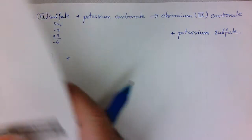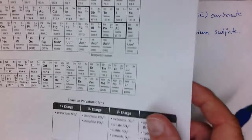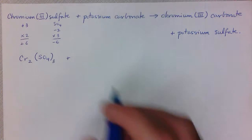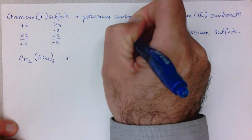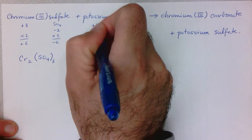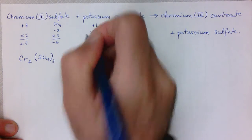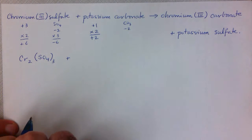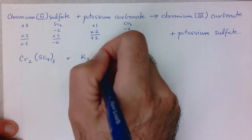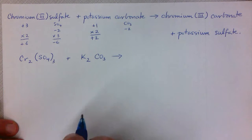Now let's go to potassium carbonate. Potassium has a charge of plus 1, and carbonate is CO₃ with a charge of minus 2. Since potassium is plus 1, we need two potassiums to get plus 2 to balance with the minus 2 carbonate. So potassium is K and we need two of them, and we need one carbonate CO₃, giving us K₂CO₃.